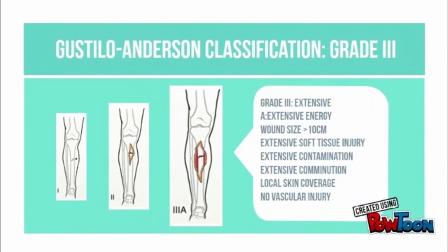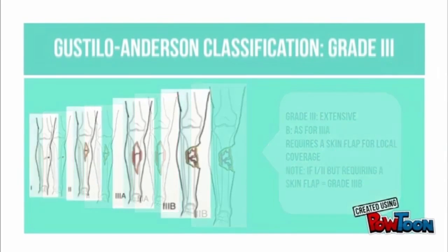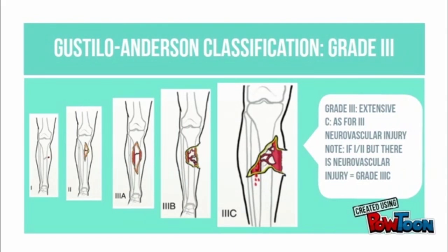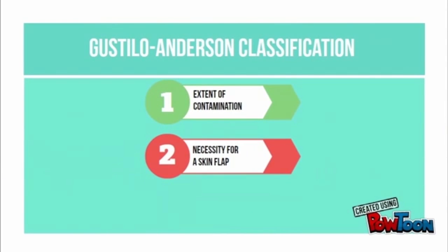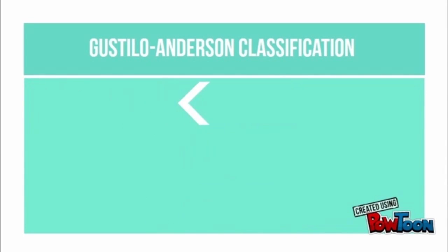Grade 3 involves extensive energy, contamination, comminution, and soft tissue injury. Grade 3B additionally requires a skin flap, and 3C has associated neurovascular injury. It is important to note that the extent of contamination, necessity for skin flap, and presence of neurovascular injury are defining features when classifying open fractures.